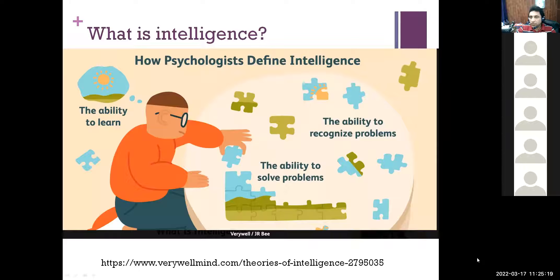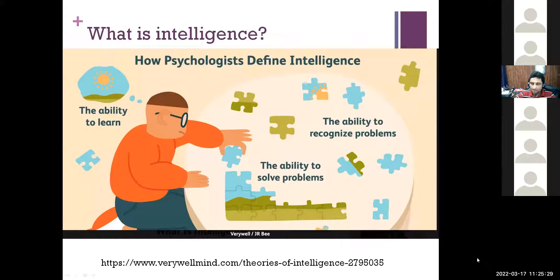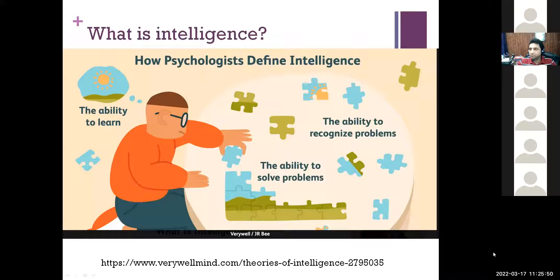Making rational decisions on the basis of given information — so you mean intelligence is the ability to take decisions. Aditya, what is your input? The most general definition I can think of: intelligence is the ability to come up with new approaches.